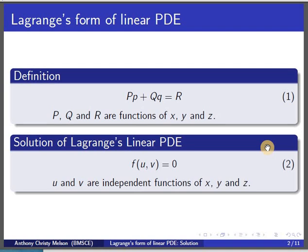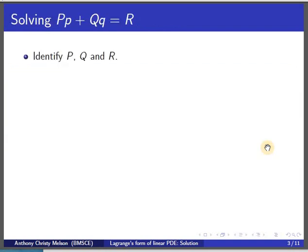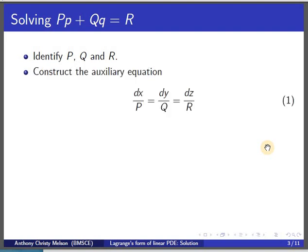The solution of equation 1 is given by equation 2, where u and v are independent functions of x, y, and z. To solve Lagrange's form of linear PDE, the first step is to identify capital P, Q, and R, and using these we construct an auxiliary equation given by equation 1. The auxiliary equation is a supporting equation which helps in the solution of the main problem.